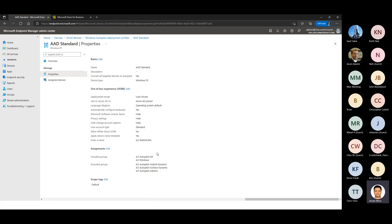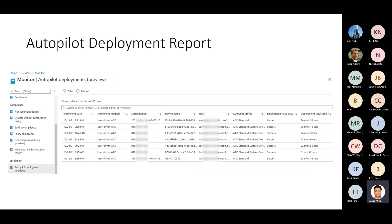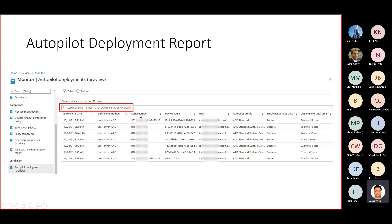Sometimes it just works fine. The first thing that came to mind was: is the device even going through an Autopilot scenario? There is the Autopilot deployment report — it's in preview and it's pretty awesome. This report only keeps data for 30 days, but you can search by device name, serial number, or Autopilot profile. We searched for the device name 'Desktop-hyphen' and found none — meaning the device didn't even go through the Autopilot experience. They likely went through the regular out-of-box experience with no Autopilot customization.